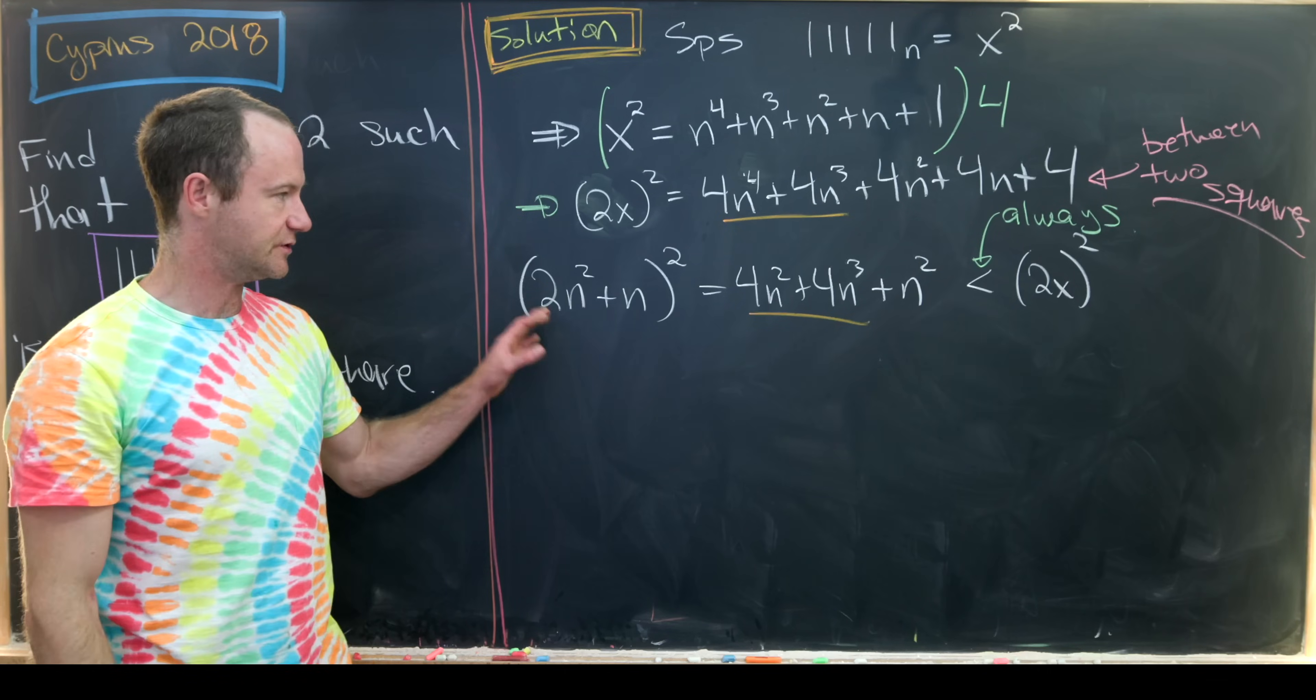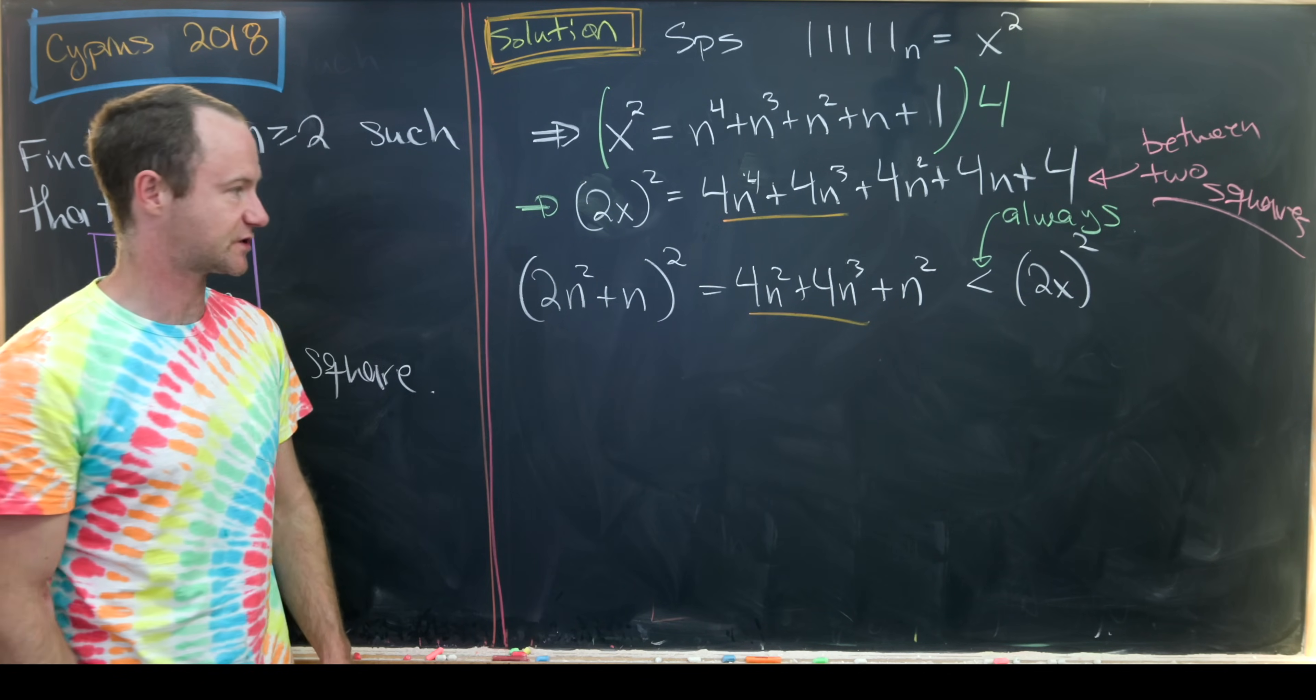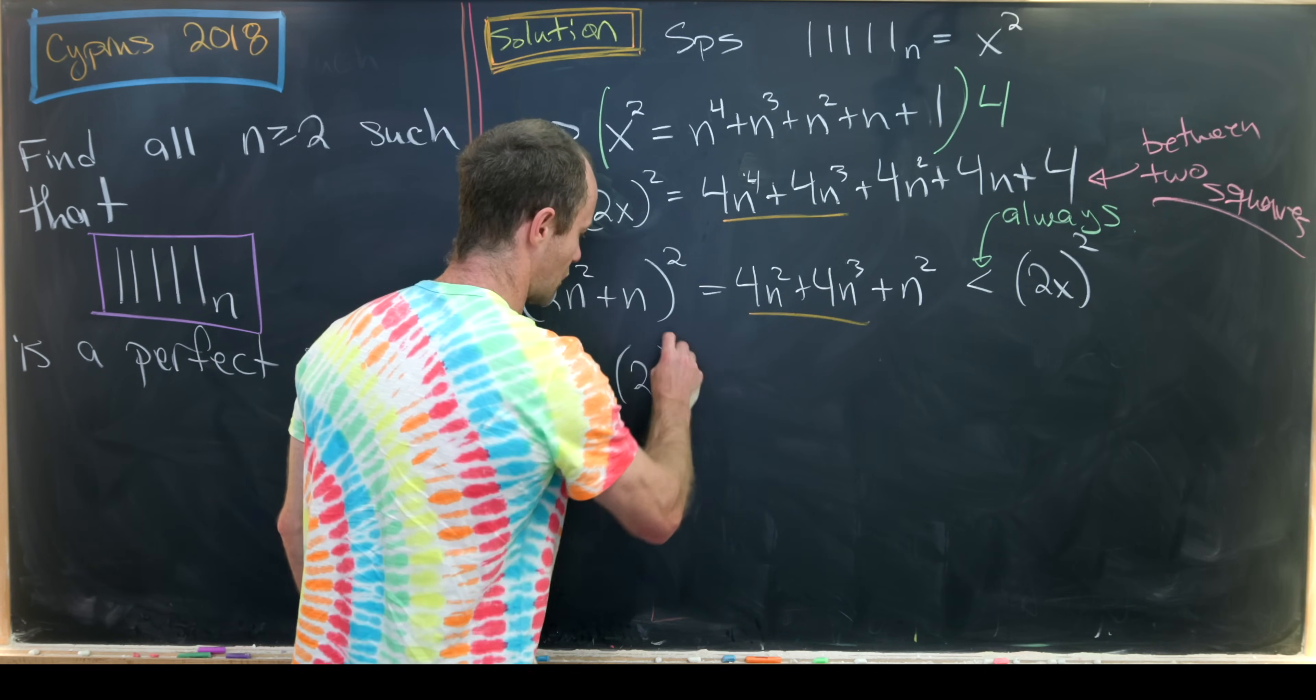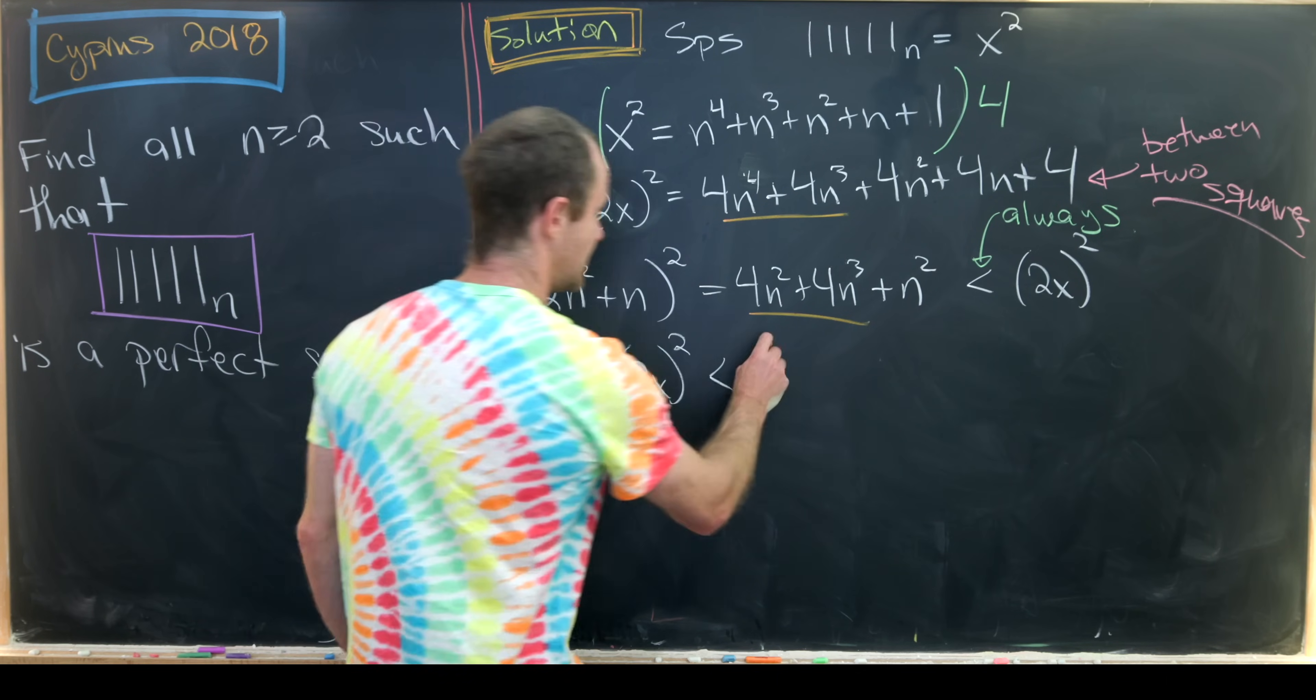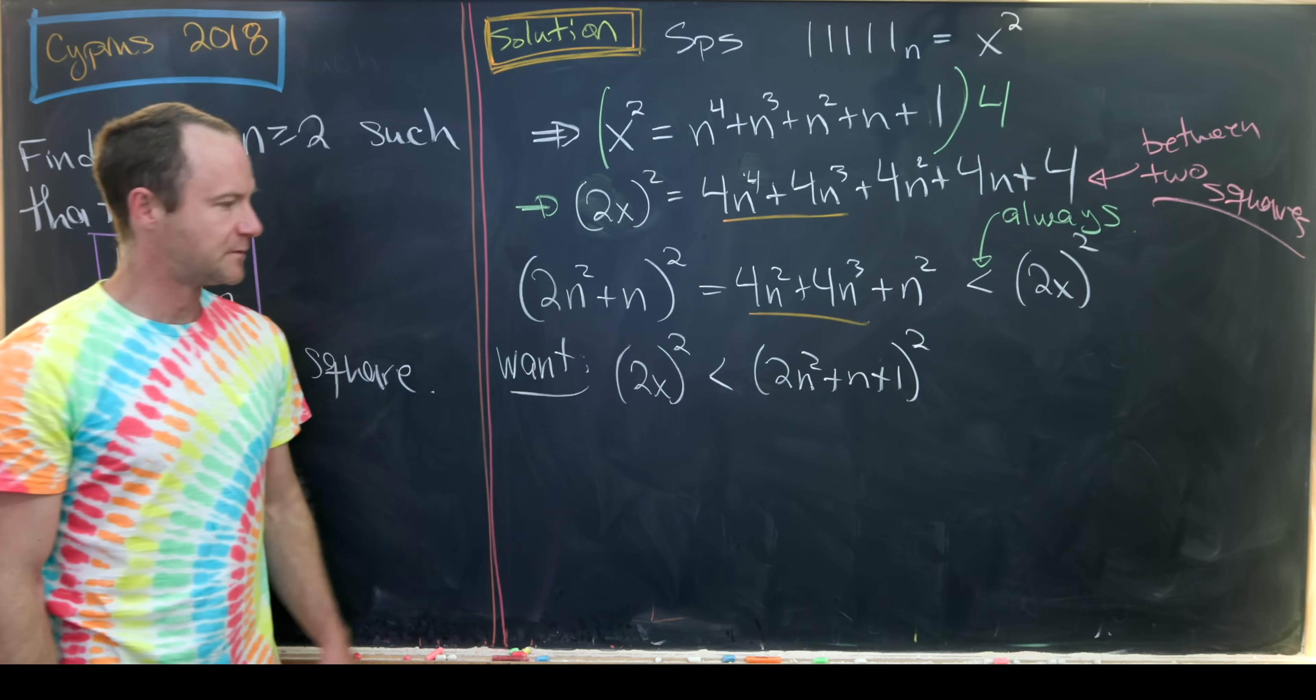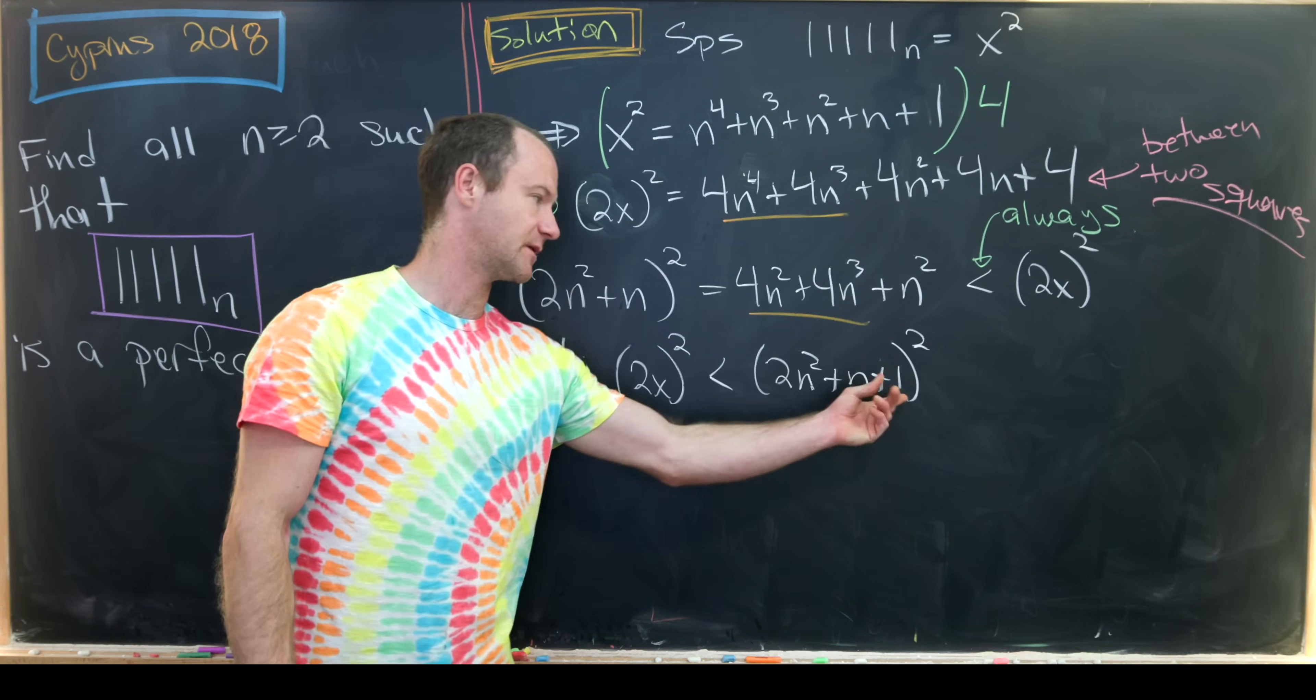Now what we'd like to do is hopefully have the perfect square just above this one is oftentimes larger than 2x squared. Okay, so let's see how we could do that. So let's say we want 2x quantity squared. In other words, our object right here to be strictly less than 2n squared plus n plus 1 quantity squared. So why would that be helpful? Well, then we'll have our perfect square between two consecutive perfect squares. We've got something squared and then that something plus 1 squared. But clearly there are no perfect squares between two consecutive perfect squares.